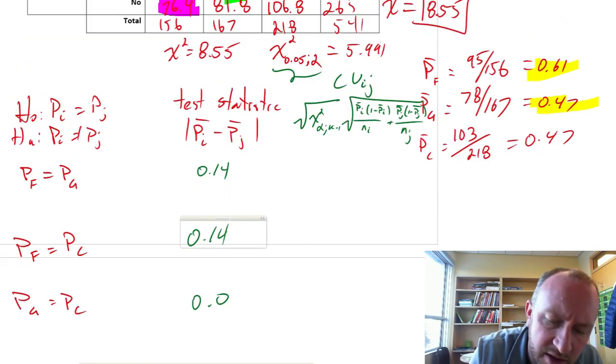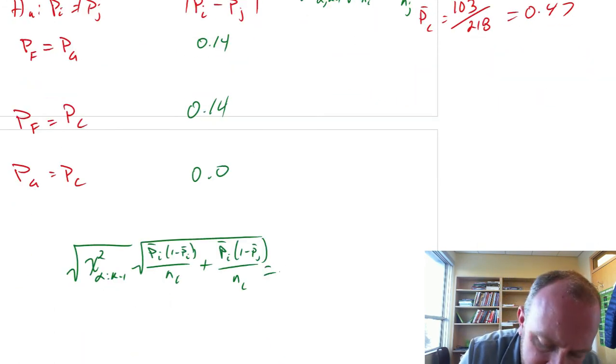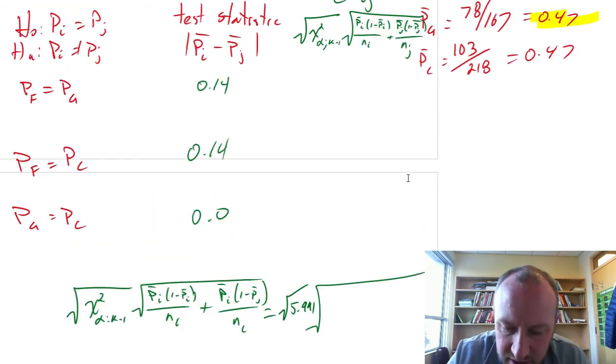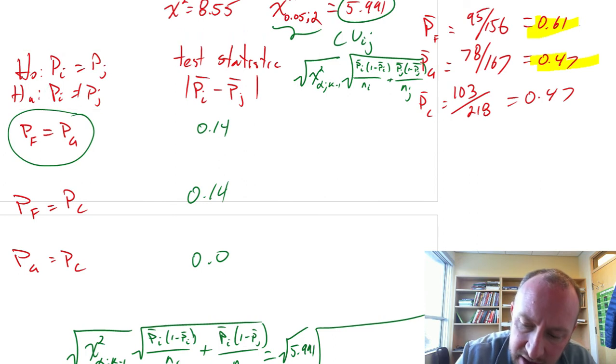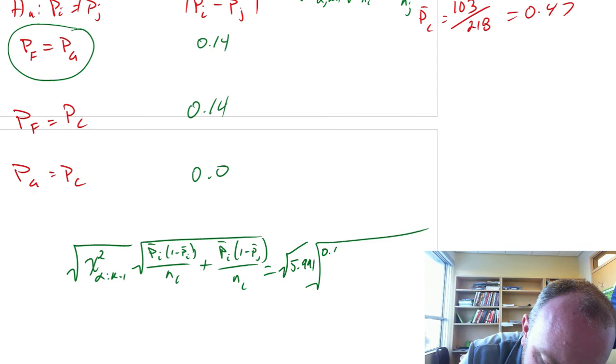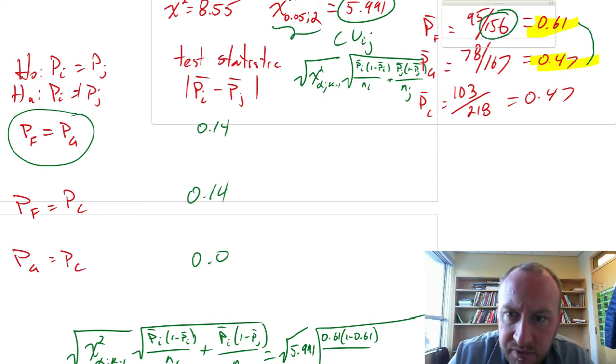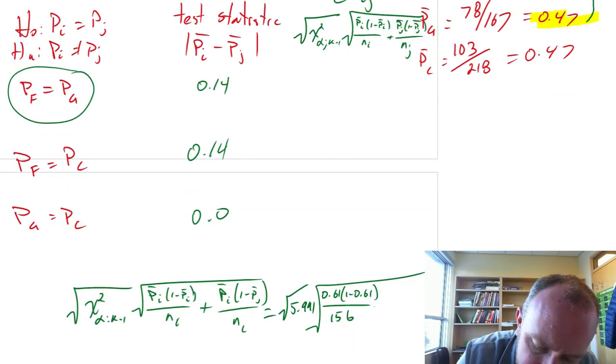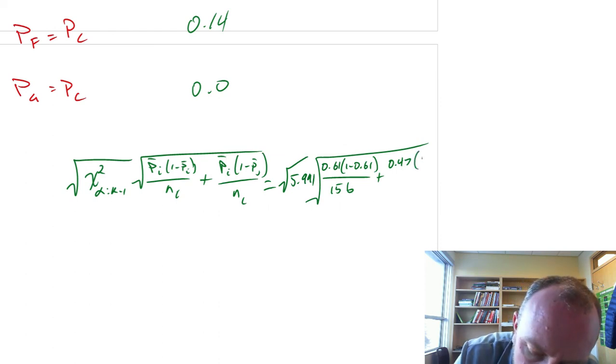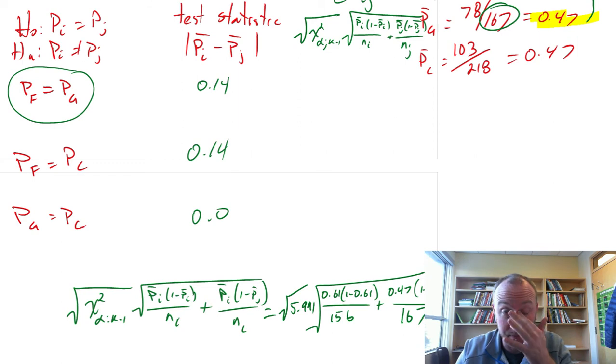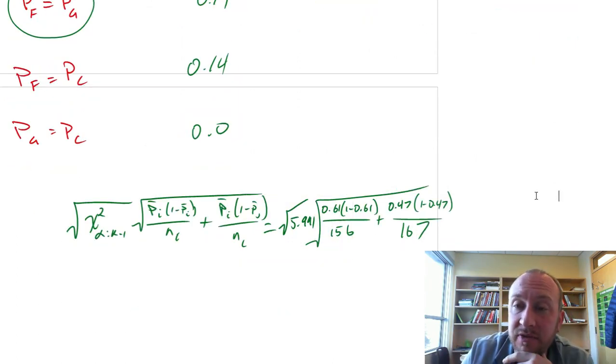So I'll just do this first one here. So the proportions that I need are 0.61 and 0.47. So this is going to be 0.61 times 1 minus 0.61 divided by 156, the number of observations in that sample. And then our proportion for the GMC, 0.47, I'm running out of room again. 1 minus 0.47. And how many observations for the GMC's do we have? 167. Okay, so that's our somewhat tedious calculation for the critical value.